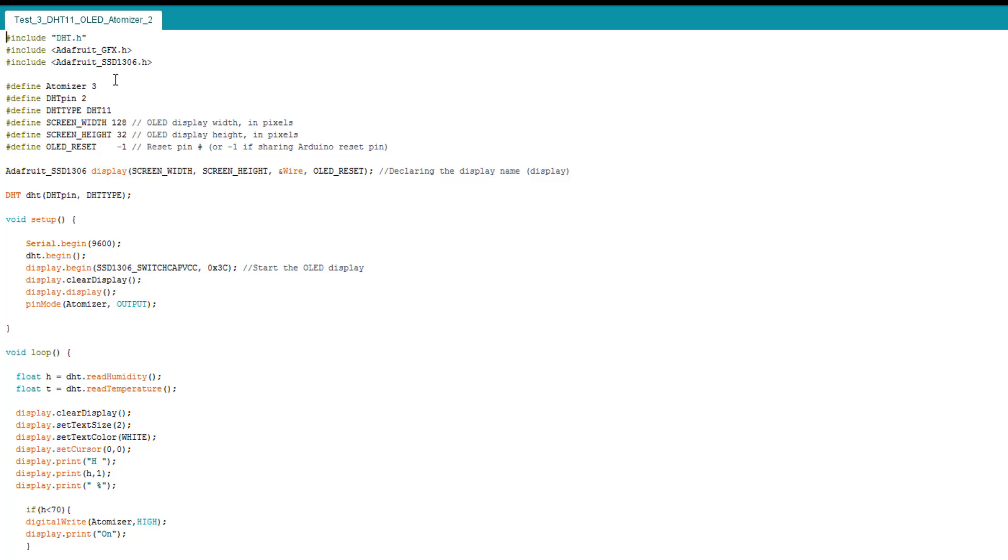This is the code. It's very simple. Here we have the DHT library. Here we have our OLED libraries—Adafruit GFX and Adafruit SSD1306. Here I identified my atomizer as pin number 3. I'm not using A5 here because the I2C is used with the OLED screen. We have our DHT pin in 2—it requires only one pin. It's type DHT11.